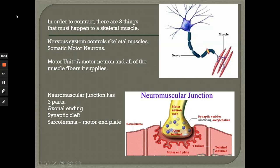In order for a skeletal muscle to contract, three things must happen: it has to be stimulated by a nerve, that nerve must propagate an action potential, and that muscle fiber must have a rise in intracellular calcium. The nervous system controls skeletal muscles through a somatic motor neuron. A motor unit is a motor neuron and all of the muscle fibers it supplies.